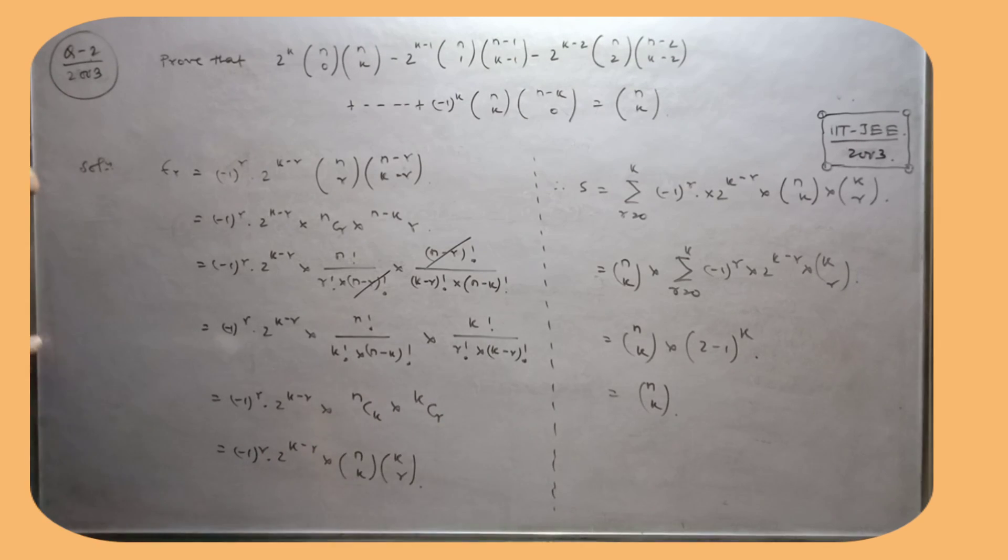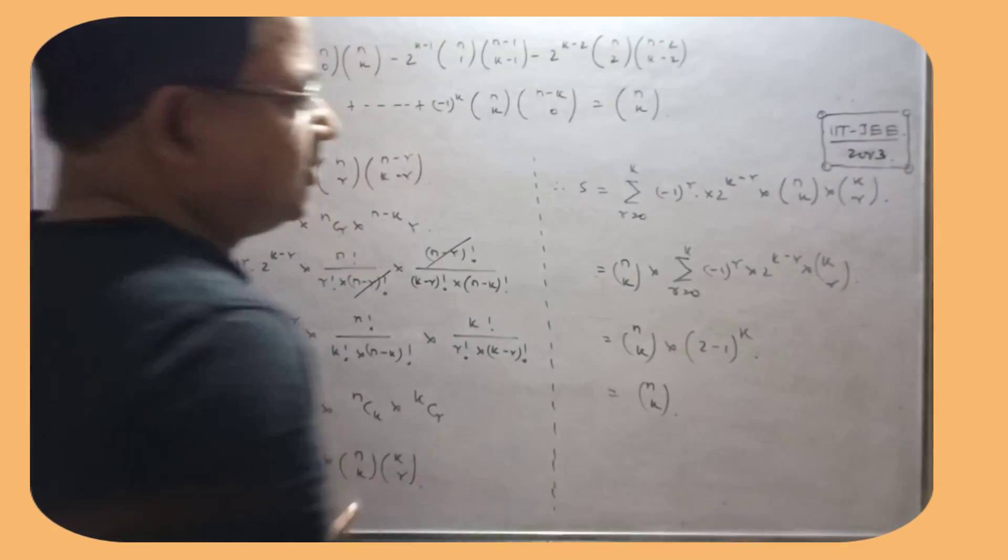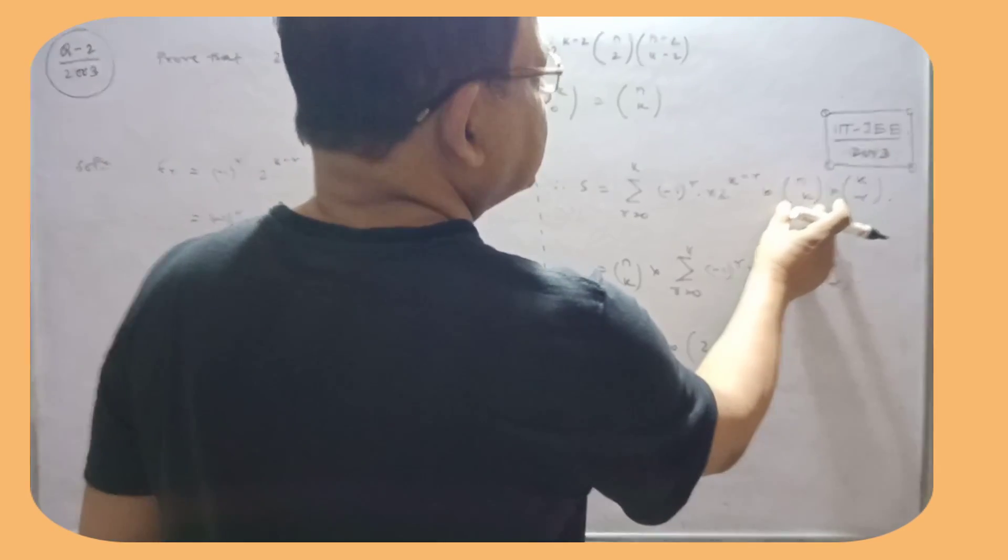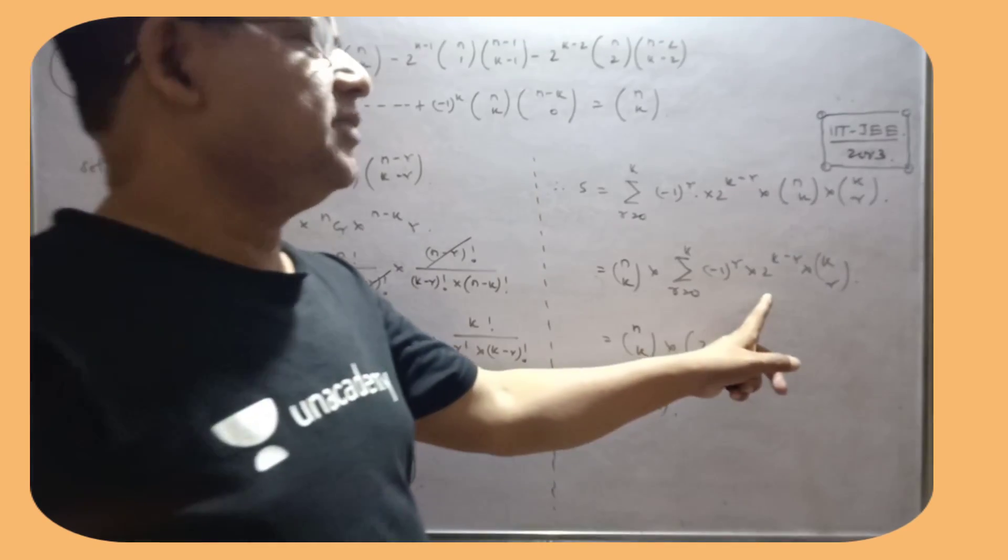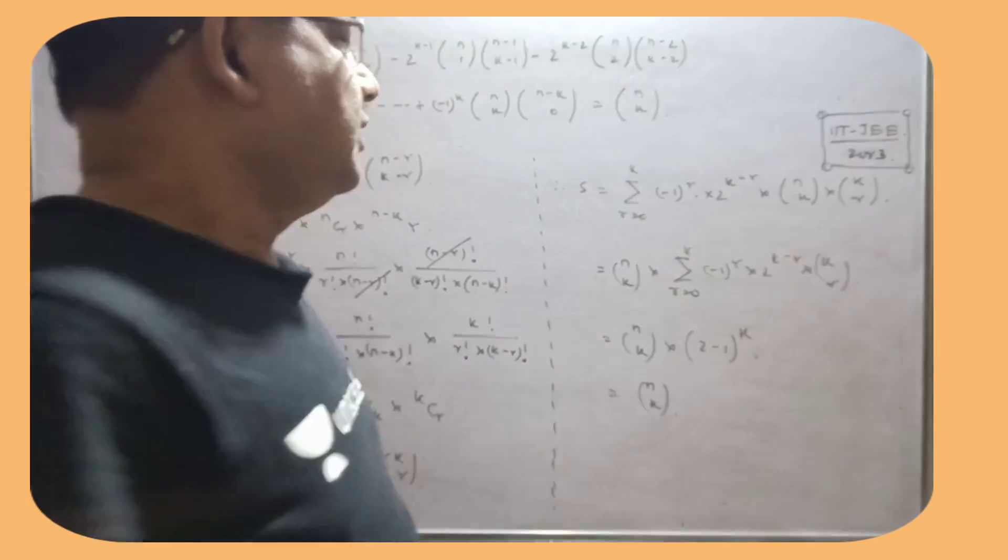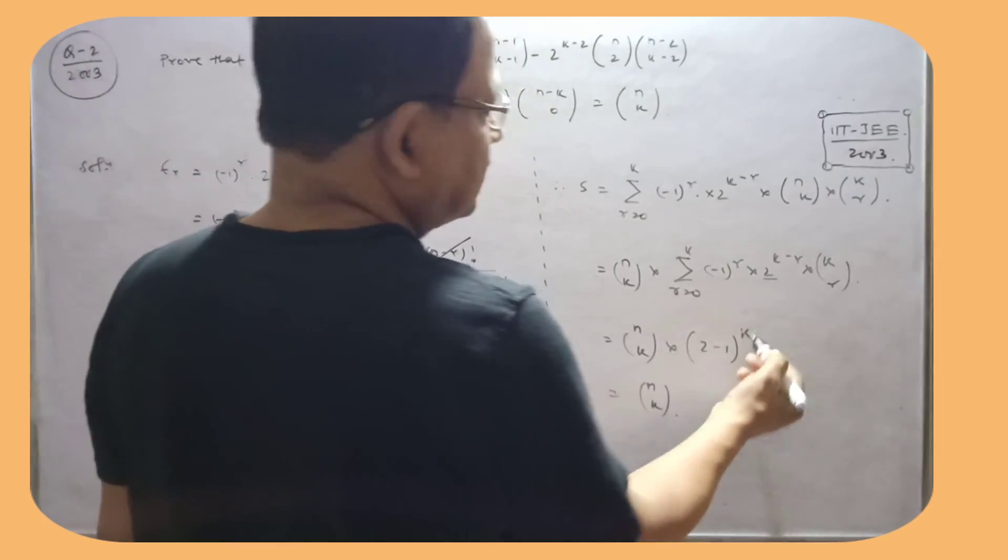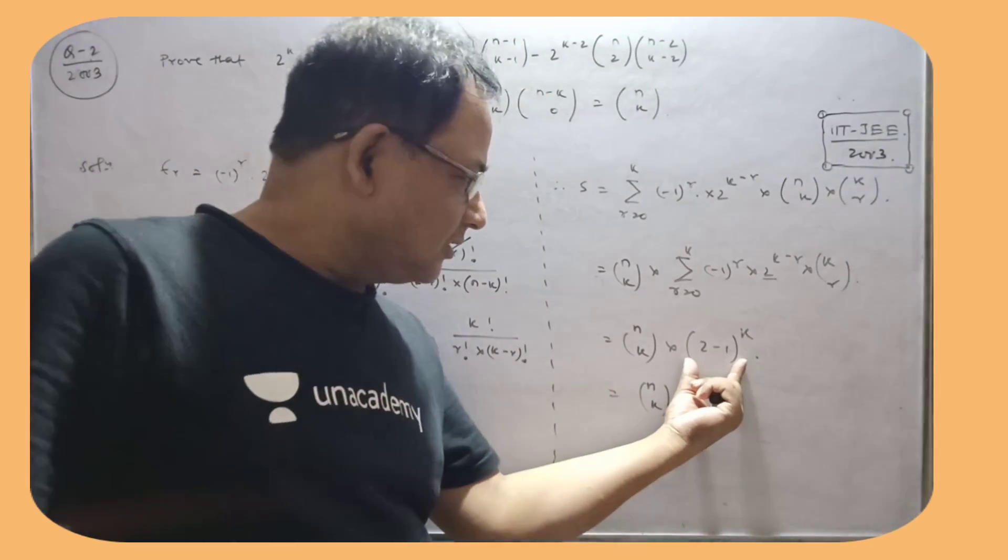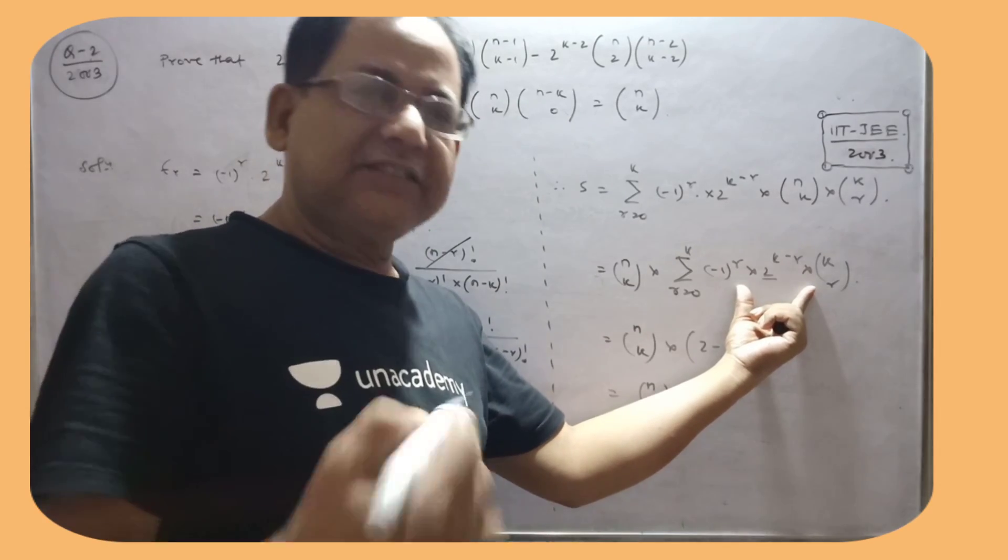So nCk into kCr. Now what to find? Find the sum. So this is summation r equals 0 to k into this. There's no r here, take r out. So this is the binomial expansion. This is 2, this is negative, so 2 minus 1 whole to the power k. The rth term is this, the rth term.